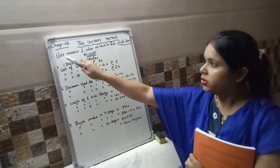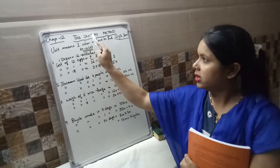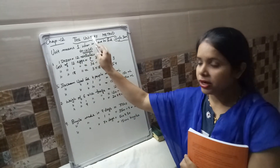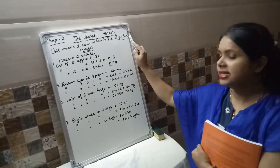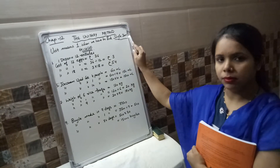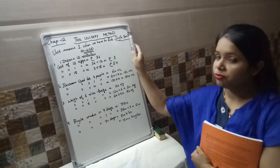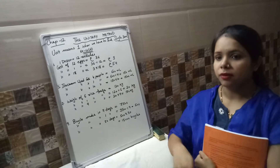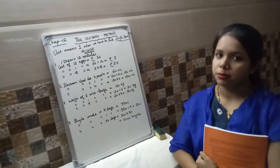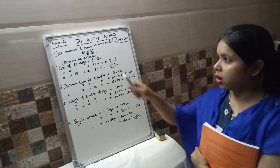Unit means 1. When we have to find a single item, first we will find that single item. Afterwards we are able to tell the value of more items.